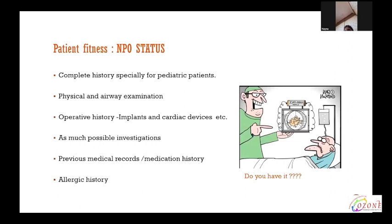For patient fitness, NPO status is the first question to be asked and confirmed. Complete history — especially for pediatric patients — which includes birth history, milestone development, disease conditions, and recent illnesses. Complete physical and airway examination. Operative history for orthopedic implants and cardiac devices is crucial for the MRI scan. As many investigations as possible should be requested. Previous medical records and medication history should be reviewed, and allergic history should be taken if any.